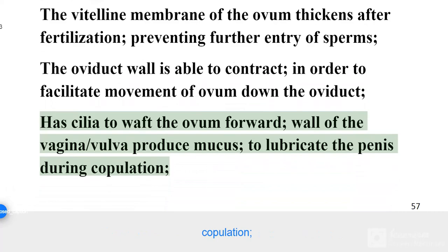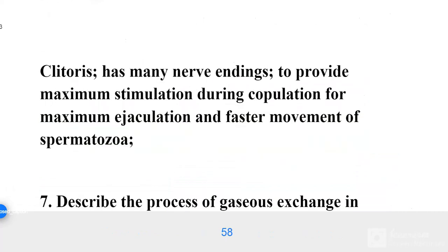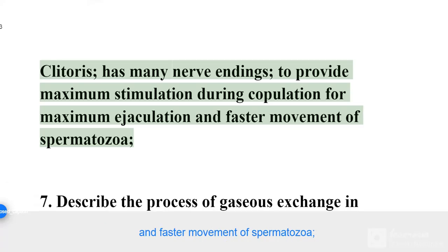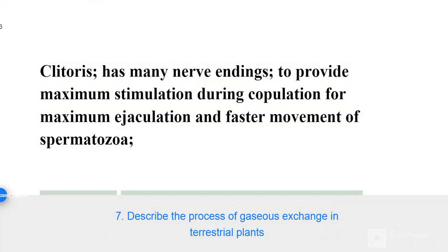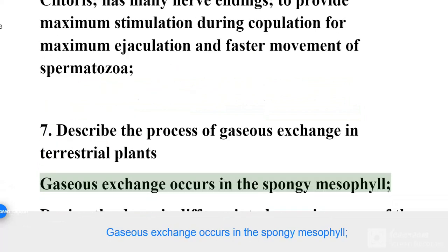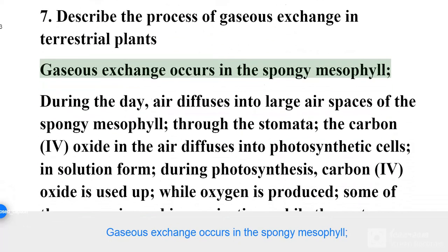The wall of the vagina and vulva produce mucus to lubricate the penis during copulation. The clitoris has many nerve endings to provide maximum stimulation during copulation for maximum ejaculation and faster movement of spermatozoa. Gaseous exchange in terrestrial plants occurs in the spongy mesophyll.